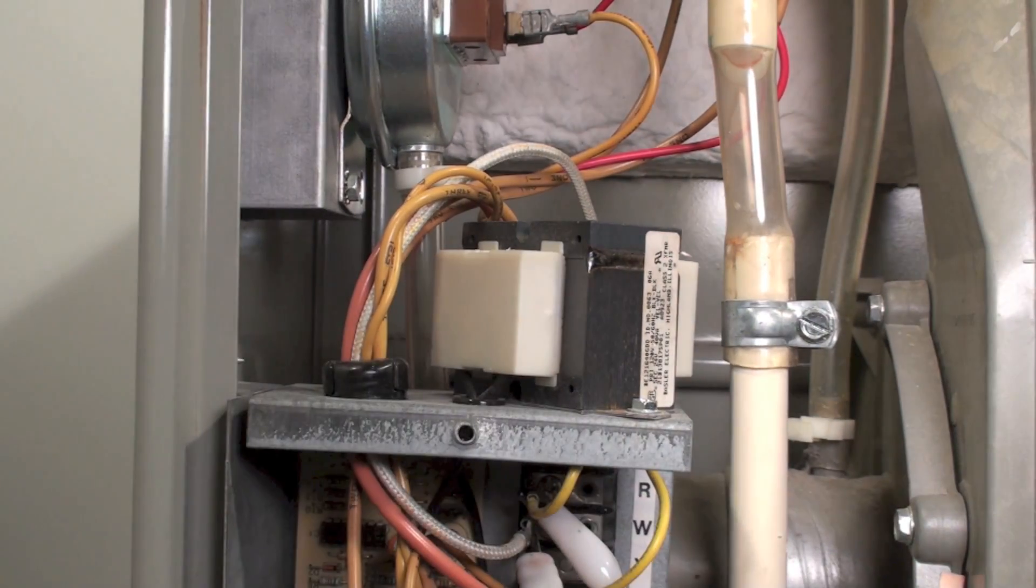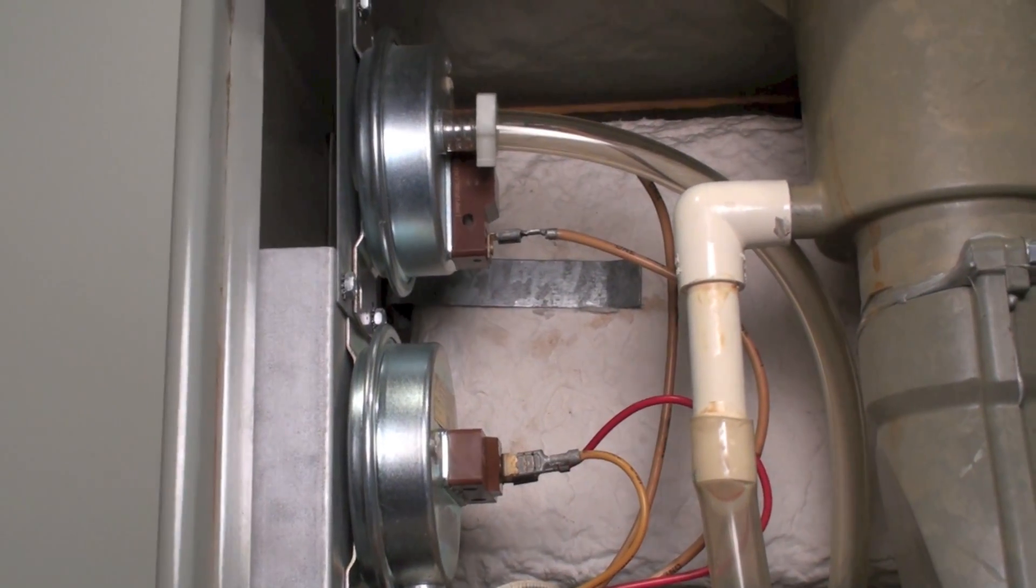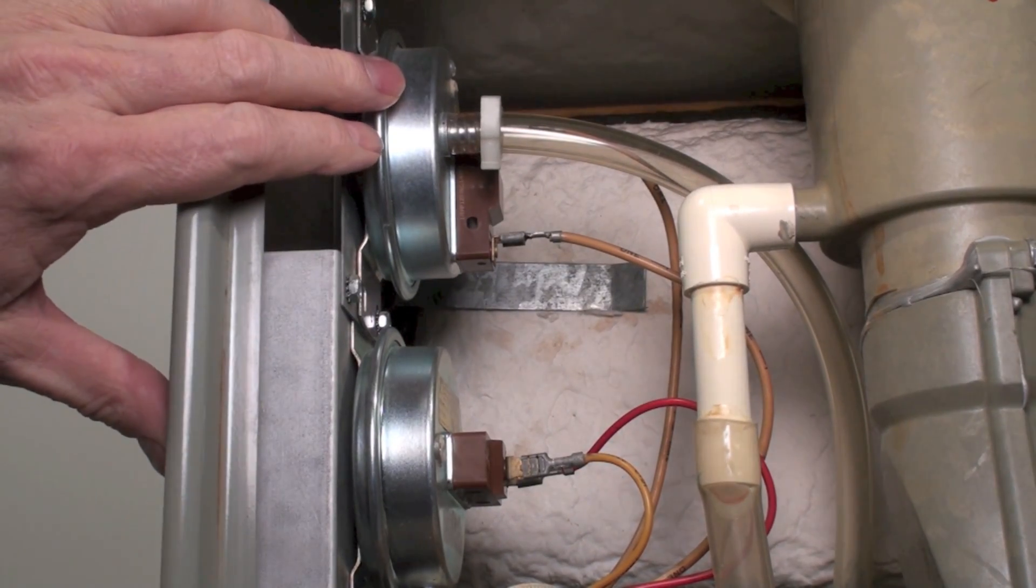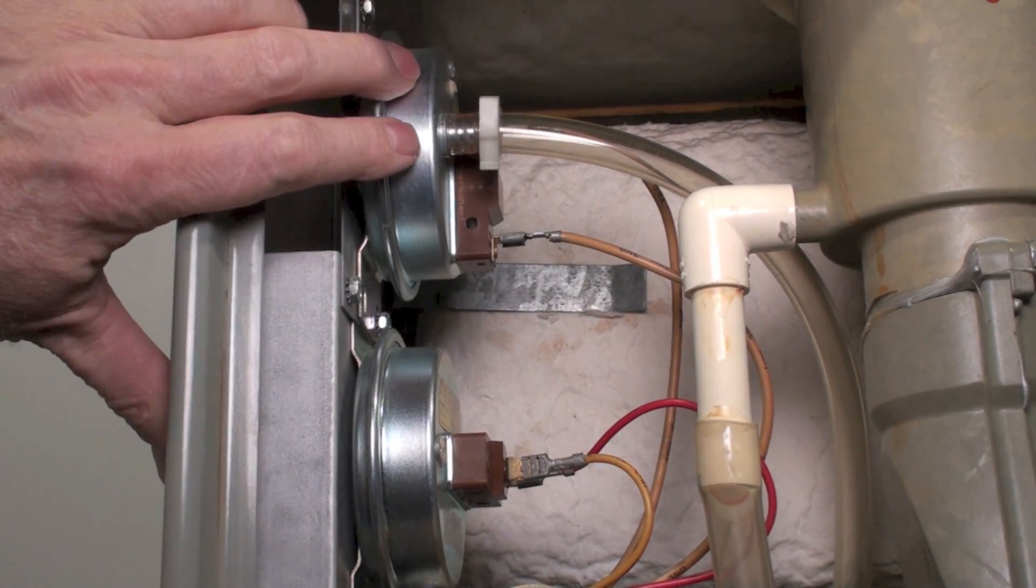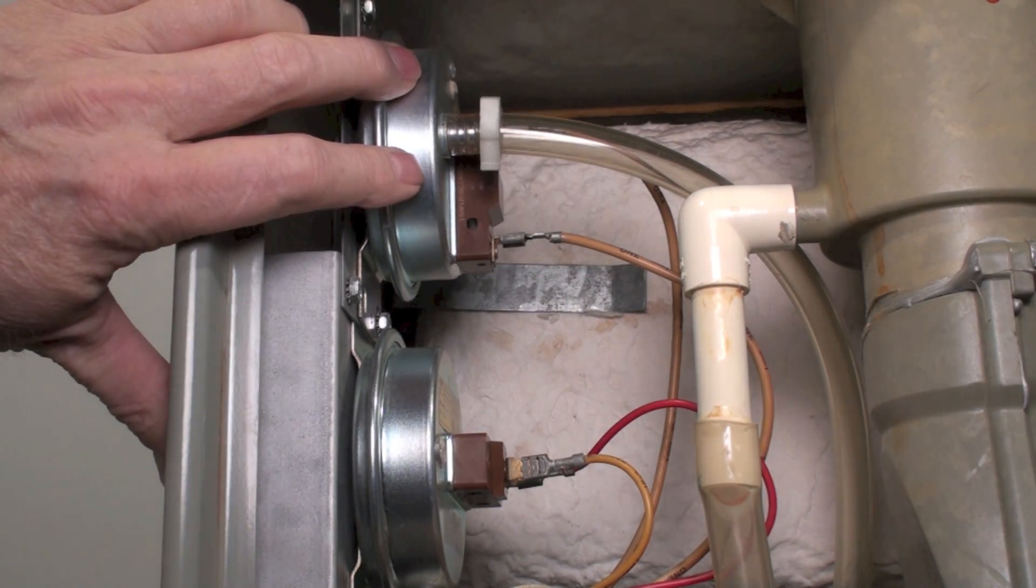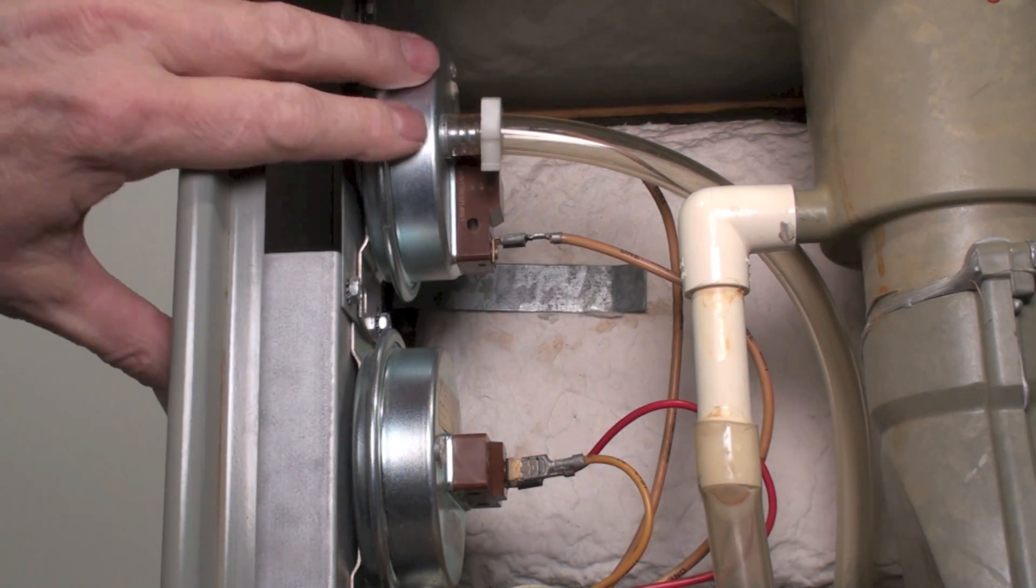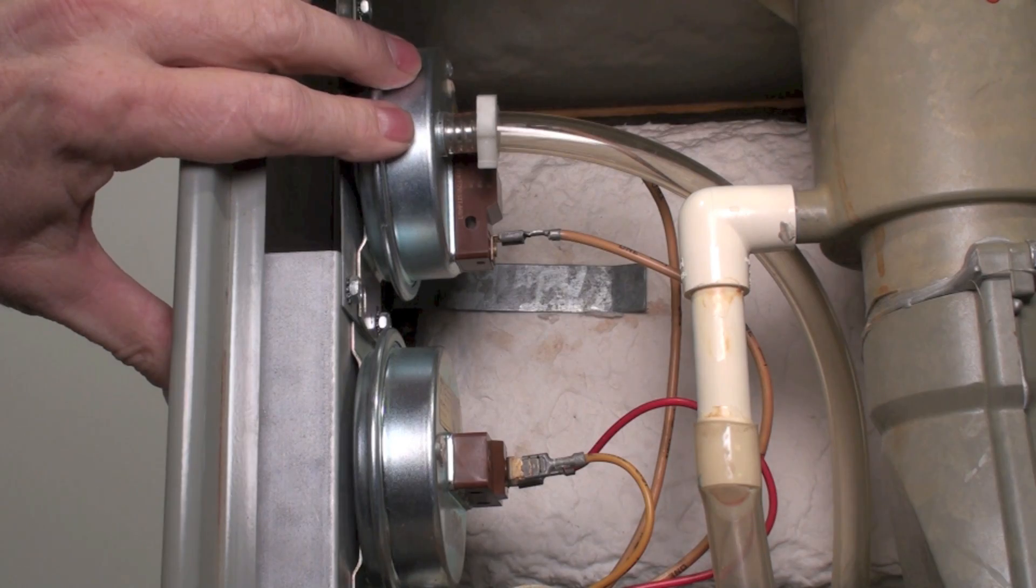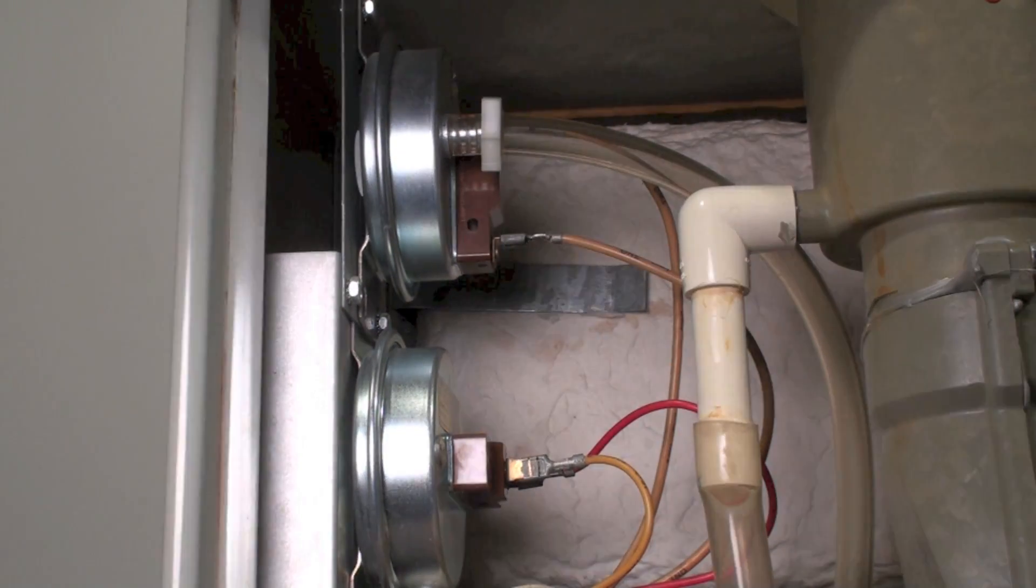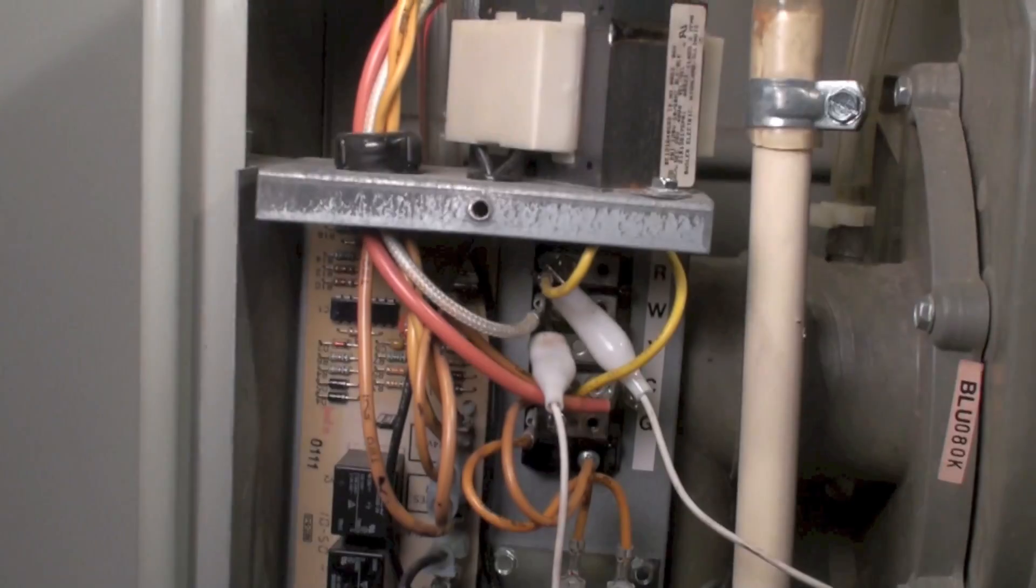What it does is when the pressure drops—this is negative pressure—when the pressure drops to a certain vacuum, then this closes. When it closes, that little circuit board down below that we were looking at a minute ago sees that the pressure switch has closed and it starts a short timer.